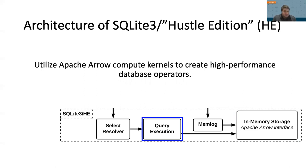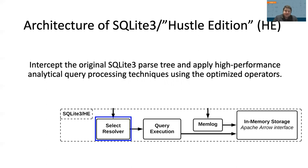From here, we can implement high-performance vectorized, parallel, and fused database operators, combining these into an analytical query processing pipeline. The select resolver acts as a gateway to the acceleration path — if a query is not supported, it proceeds through the standard SQLite 3 pipeline. If a query is supported, the select resolver applies state-of-the-art analytics query optimization techniques using the SQLite 3 parse tree, such as look-ahead information passing. A number of these techniques were shown to work well on a previous project called QuickStep. We focused on implementing these key techniques using Apache Arrow — that portion is called Hustle, hence the name SQLite 3 Hustle Edition.